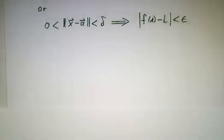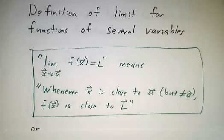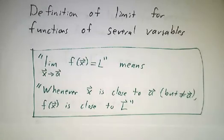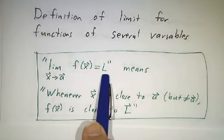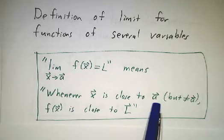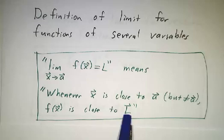Now things don't get much different when we talk about functions of several variables. It's the same definition, but the limit as x approaches a of f equals L just means whenever x is close to a, only now x and a are vectors, f is close to L.